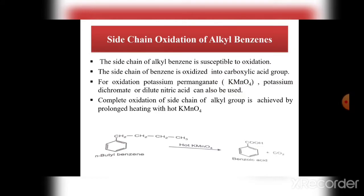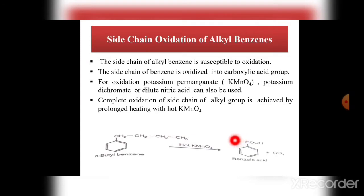Complete oxidation of the side chain of an alkyl group is achieved by prolonged heating with hot KMnO₄. In a given example, this is n-butyl benzene and the oxidizing agent is hot KMnO₄. Here there is complete oxidation of the side chain and the product obtained is benzoic acid plus CO₂.